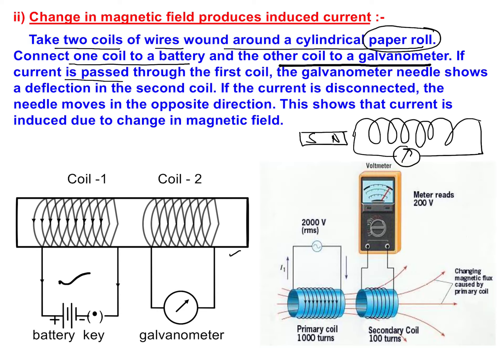If current is passed through the first coil, you will notice that the galvanometer needle shows a deflection — meaning current is induced in the second coil.